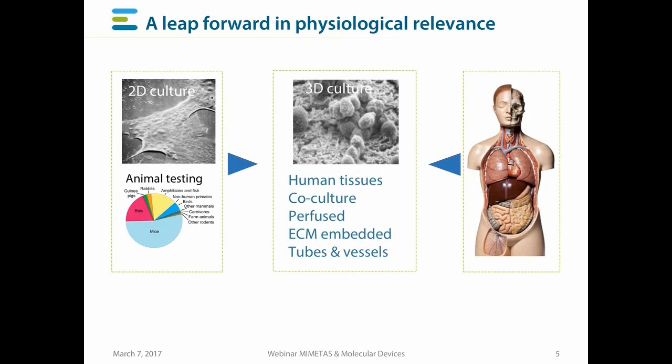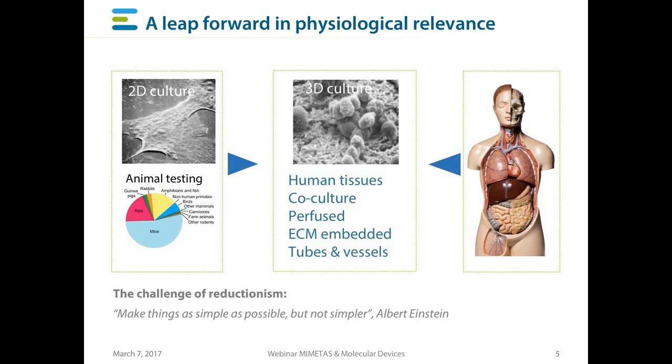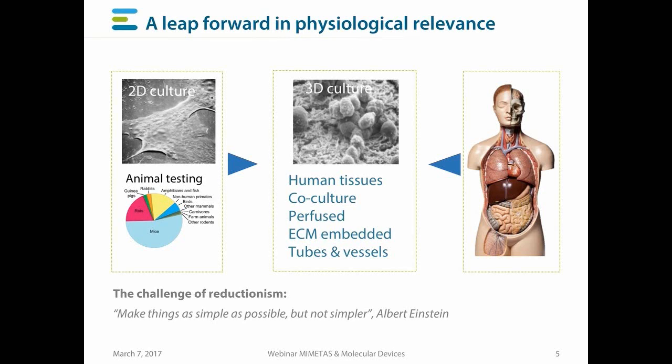These 3D models should be perfused, for example with an artificial blood flow. They should contain tubes and vessels, and the cells should be embedded in an extracellular matrix, mimicking the physiological environment of cells in normal human tissues. The models need to be complex enough to allow us to do the measurements that we want, but not too complex, which would prevent us from doing any useful experiments. As Einstein said, make things as simple as possible, but not any simpler.